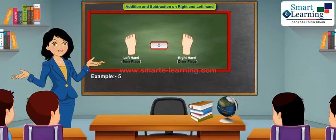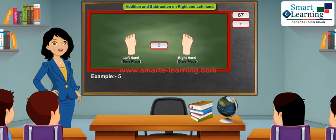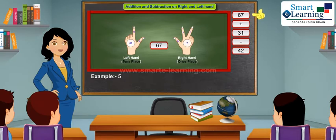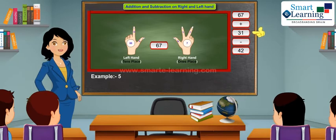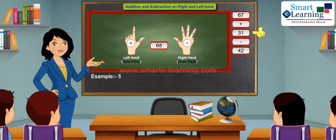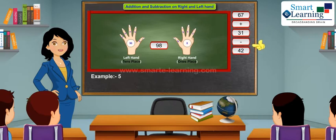Let's solve: 67 plus 31 minus 42. Take 67 on your left and right hand respectively. In order to add 31, first add 1 on the right hand by taking 1 more finger, and 3 on the tens place by taking 3 more fingers on your left hand.